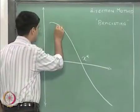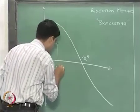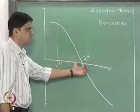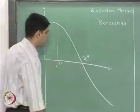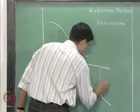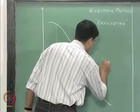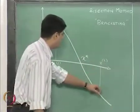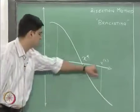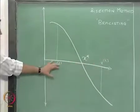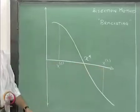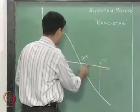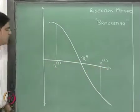The first guess that we will have we will write as x l, where l represents that it lies to the left of x star, and the other one we will write as x r to represent that x r lies to the right of x star. These are the two initial guesses that we will start off with. Since it is a bracketing method, these two guesses should lie on either side of x star.